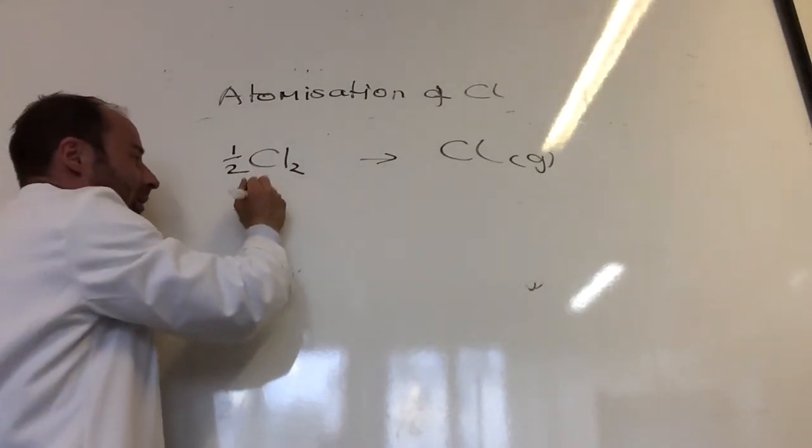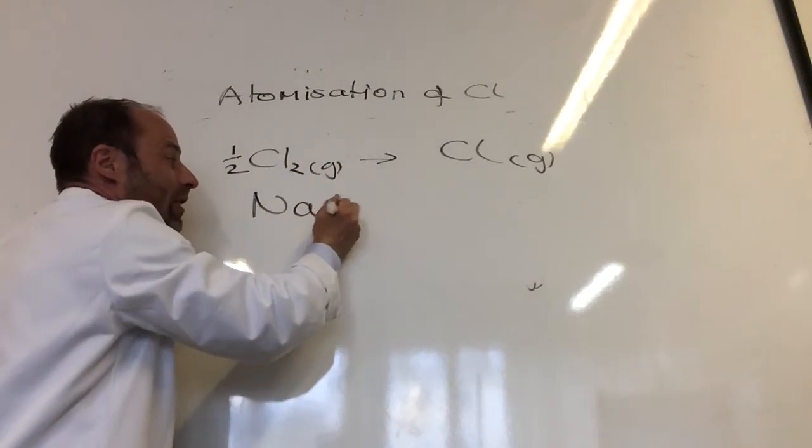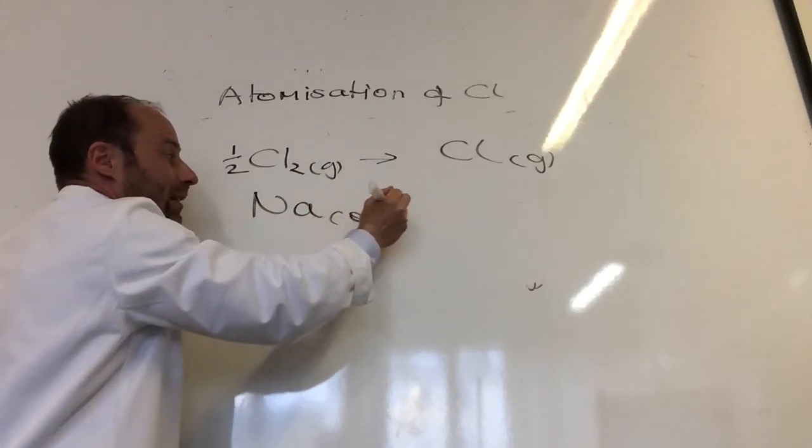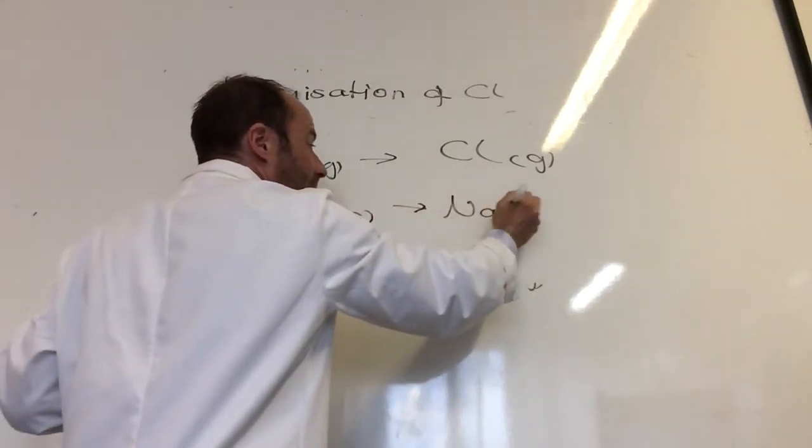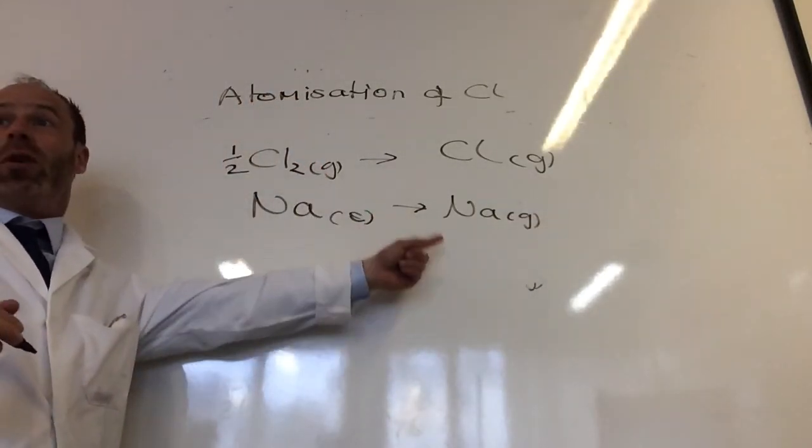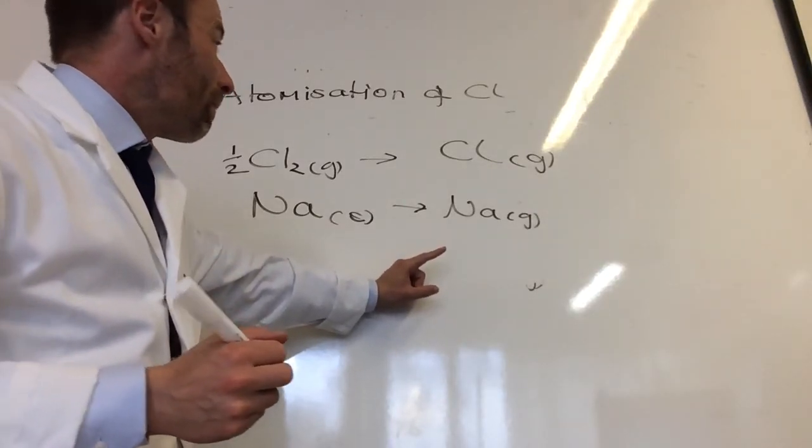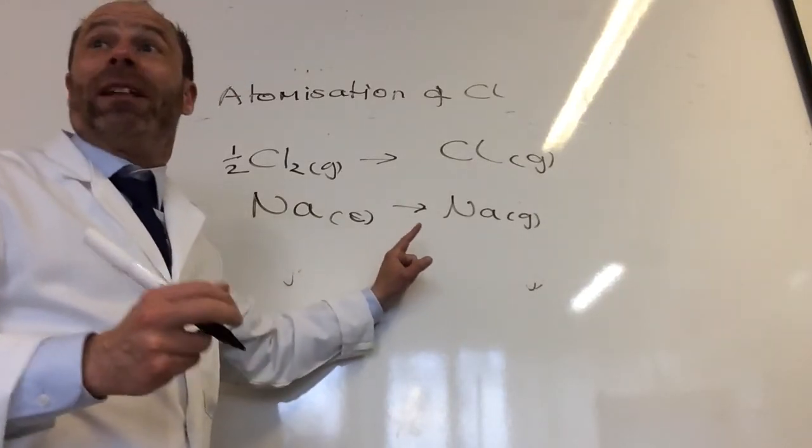For sodium, it would be sodium solid becoming sodium gas and so on. So you've always got to form one mole of gaseous atoms and that's atomization. But the Cl would be like a free radical or something? Yeah, that's right.